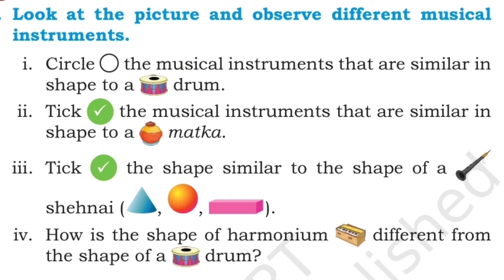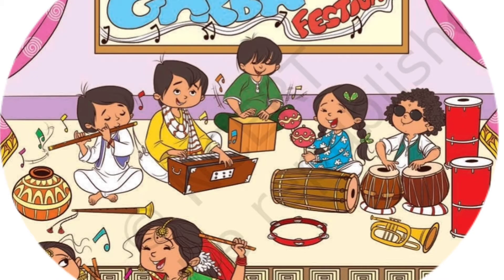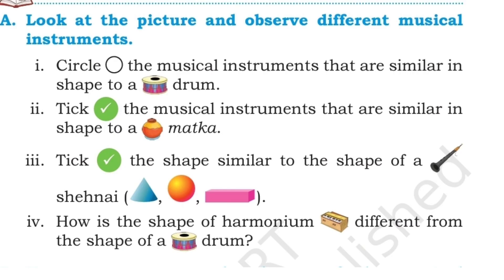Take the musical instruments that are similar to the shape of a matka. The pot is in a sphere shape. So this is the shape of the matka — both are in similar shape, in a sphere shape.